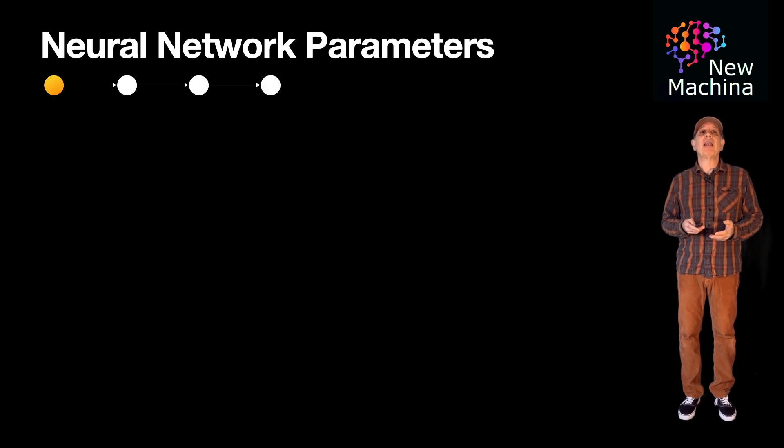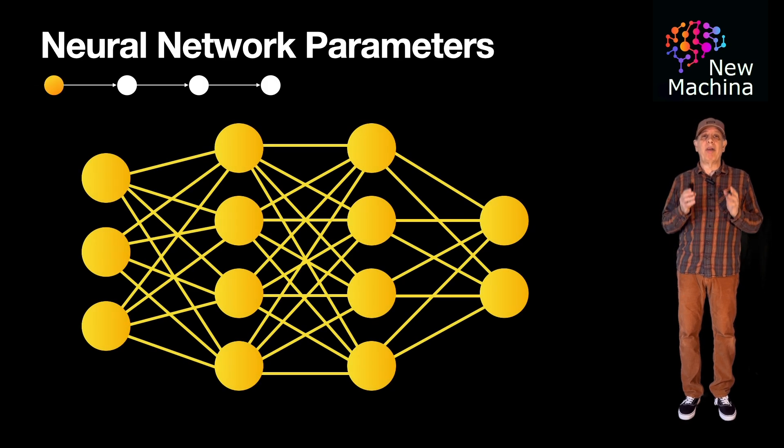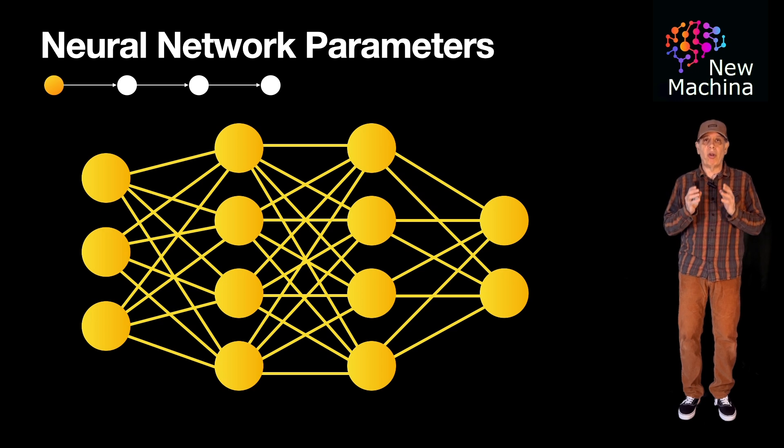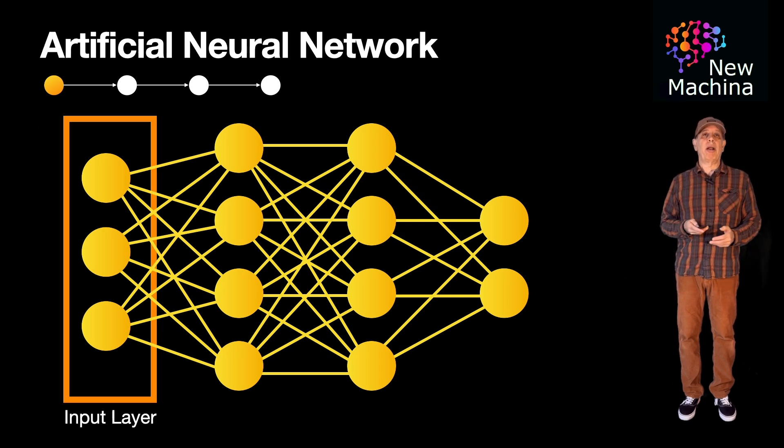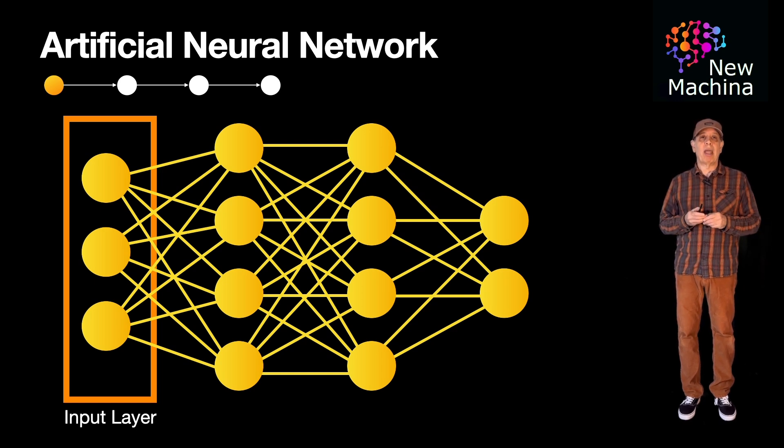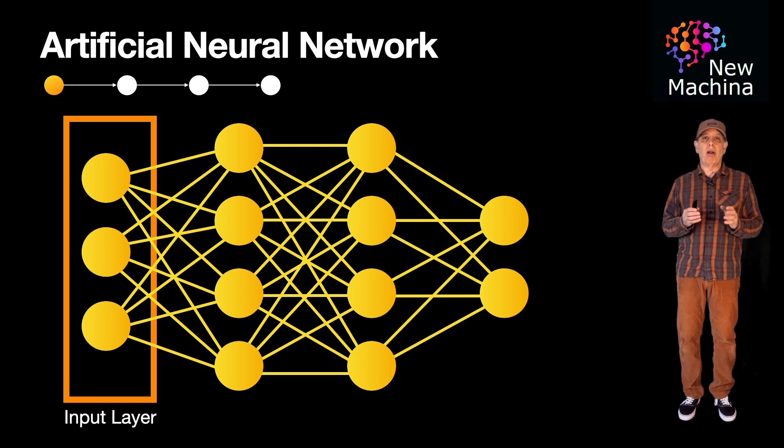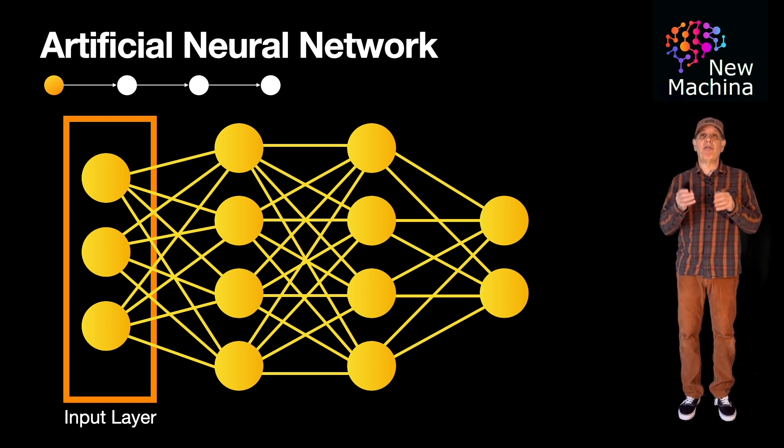To explain parameters, let me start by showing you a diagram of a simple artificial neural network. Each node in this network represents an artificial neuron. Each neuron is connected to all the other neurons in the next layer. Here you see an input layer. The input layer represents the input features or where the data is fed into the network. Each neuron in this input layer corresponds to a feature of the input data.